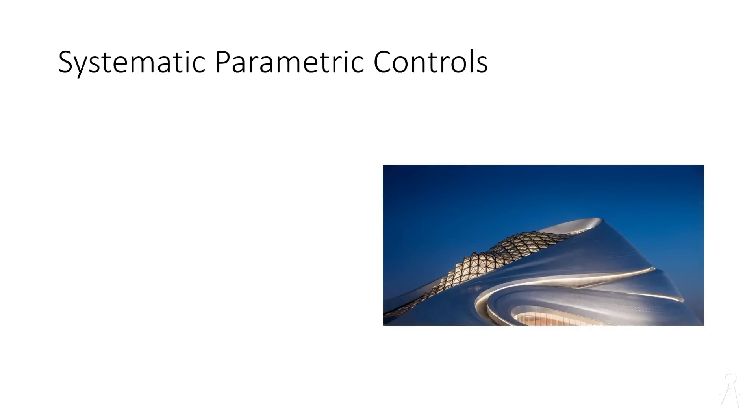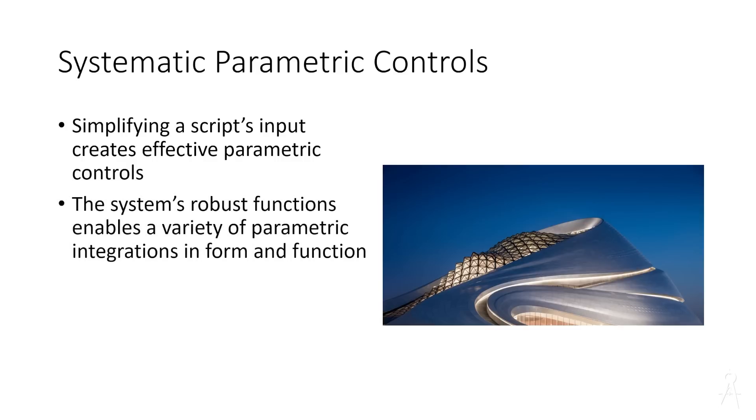Here's the key of systematic parametric controls. That's where we link all those ideas for working on code and algorithms into parametric systems. The first thing we're going to be doing when we get to the level of parametric controls is when we simplify the script's input also as output to create effective parametric controls. That means we know what's going in, we know what's going out.